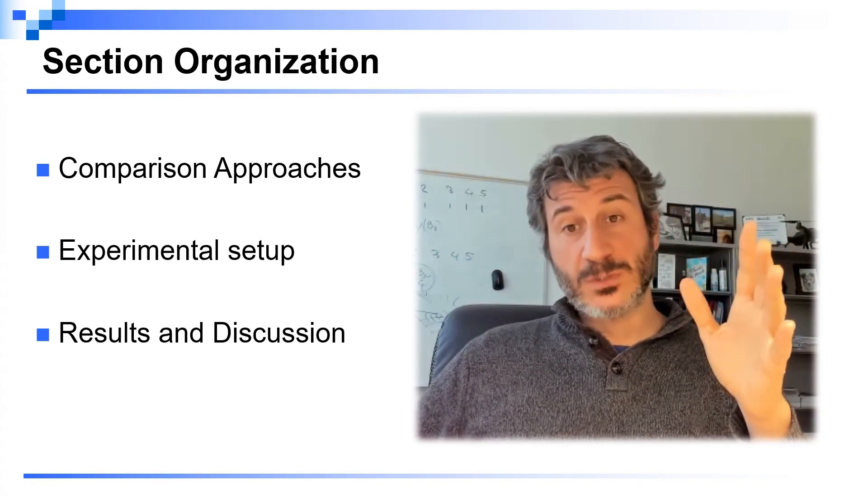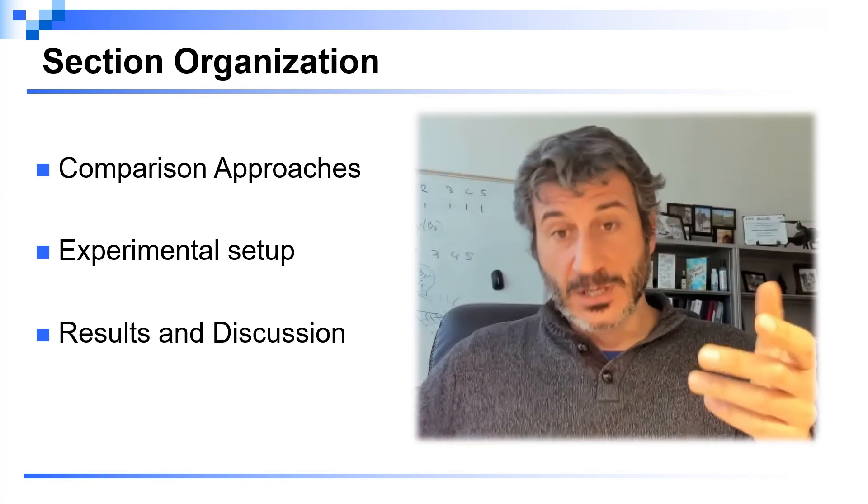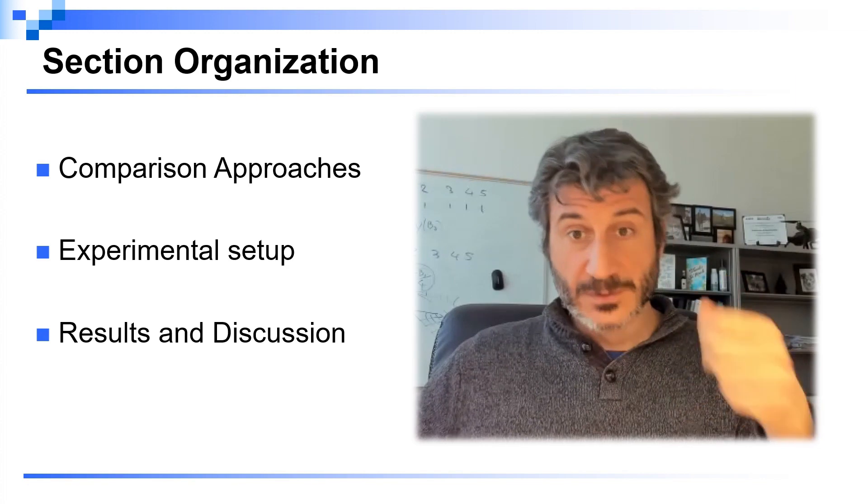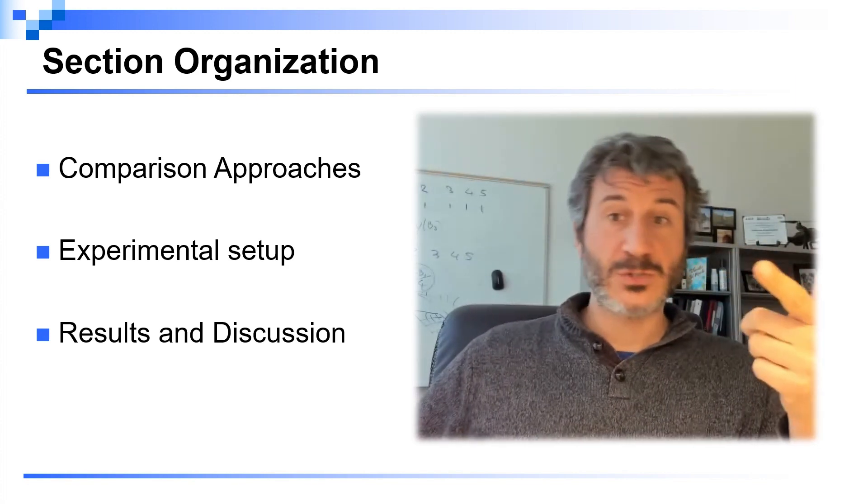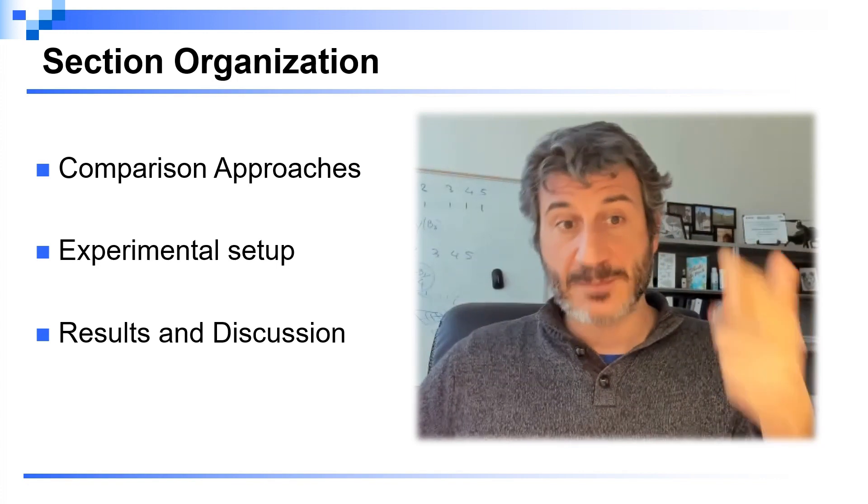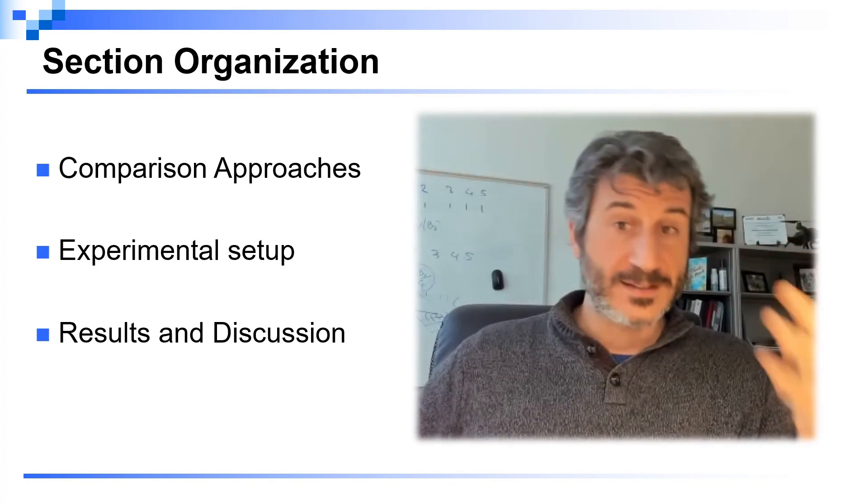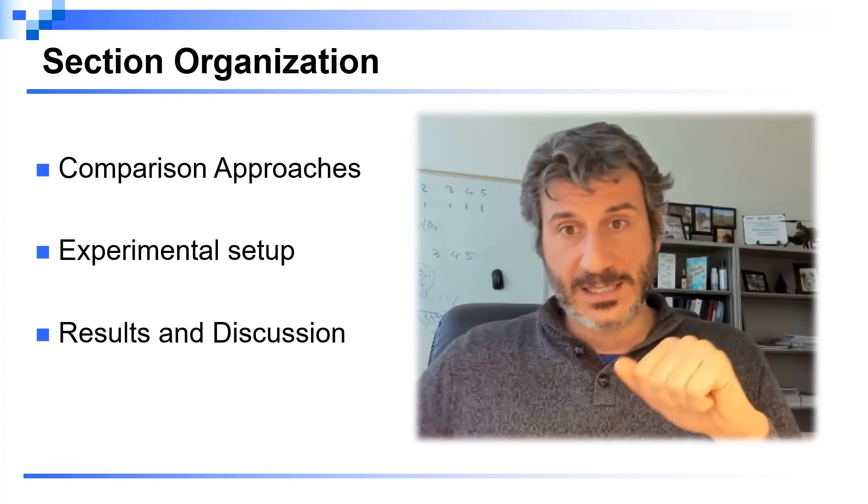One of the first things I want to address is what is a good organization for the experimental section. I like to divide it into three major subsections: the first explains the comparison approaches, the second explains the experimental setup, and the third presents the results and provides discussion.